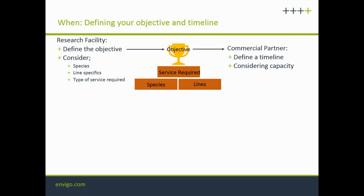At that point you want to start talking to a commercial partner, who should be able to define a timeline for you based on that information and their capacity. This should lead to a feedback loop — it's not a case of you define the objective and your commercial partner simply defines what's logistically possible. The research facility needs to consider any practical limitations, because the commercial partner's capacity may be much larger than yours — for example, they might suggest freezing 30 lines per week when you don't have the manpower to pack 30 colonies per week for transport.